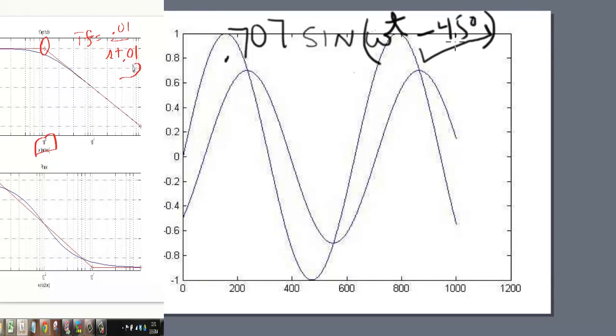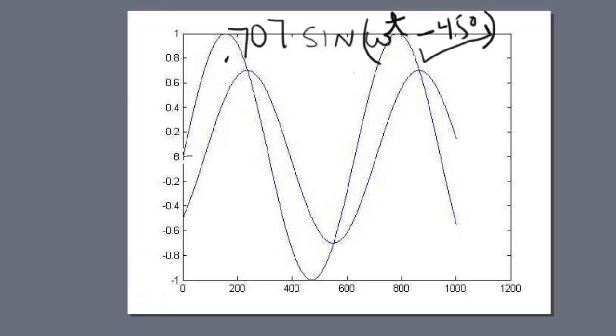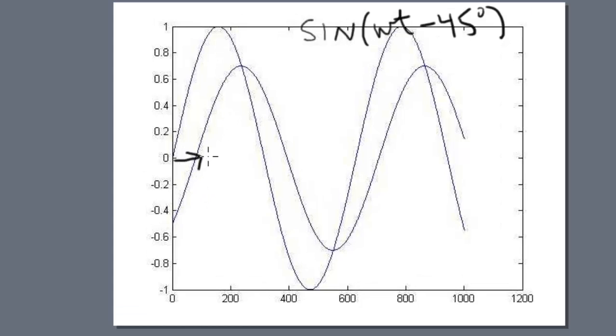So that's a quarter cycle. We can see over here that if we shift the input curve 45 degrees, this would be one-eighth of a cycle. Then, we'd end up with the output curve. And it would be 3 dB down from the input minus 3 dB, and it would be 45 degrees out of phase.